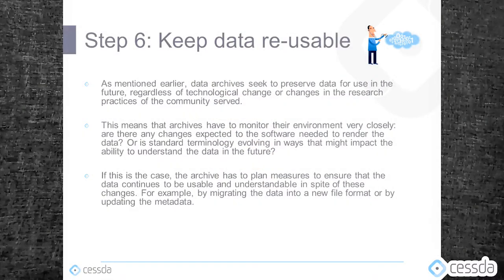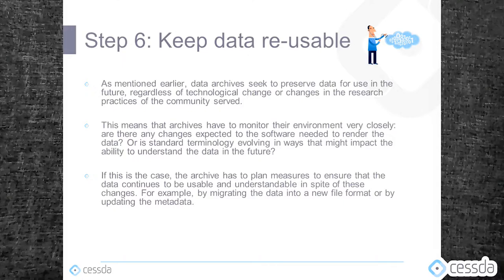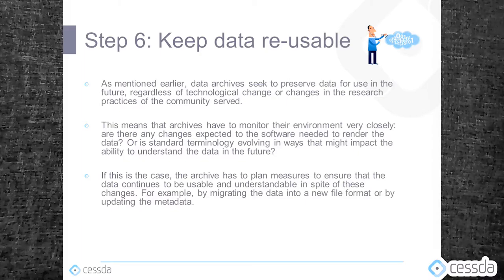Step number six: keep the data usable. Data archives seek to preserve data for use in the future regardless of technological change or changes in the research practices of the served community. This means that archives have to monitor their environment very closely. Are there any changes expected to the software needed to render the data? Or is standard terminology evolving in ways that might impact the ability to understand the data in the future? If this is the case, the archive has to plan measures to ensure that data continues to be usable and understandable, for example by migrating the data into a new file format or by updating the metadata.